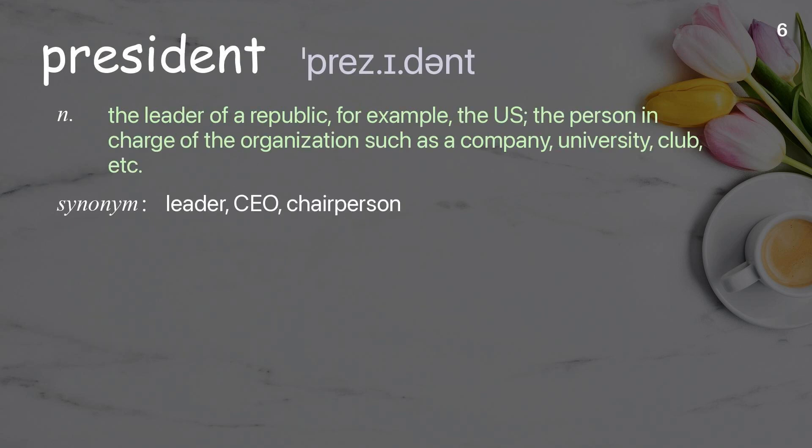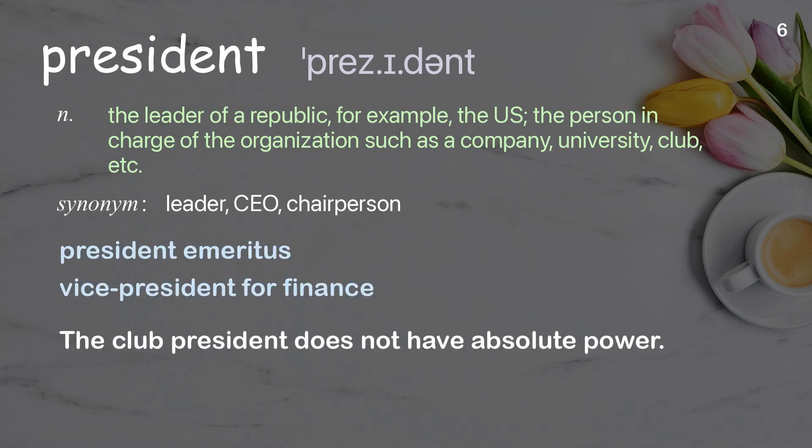President: The leader of a republic, for example the U.S., or the person in charge of an organization such as a company, university, club, etc. Examples: President Emeritus. Vice President for Finance. The club president does not have absolute power.